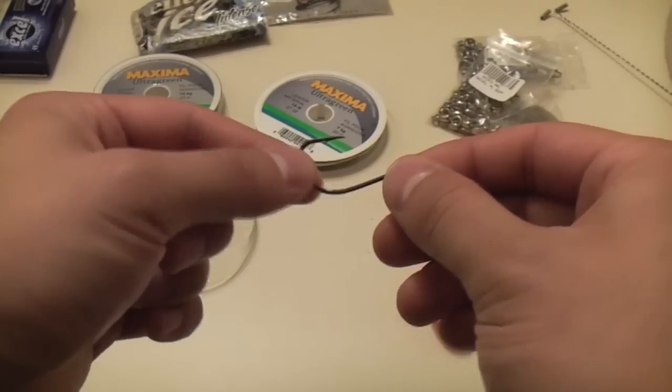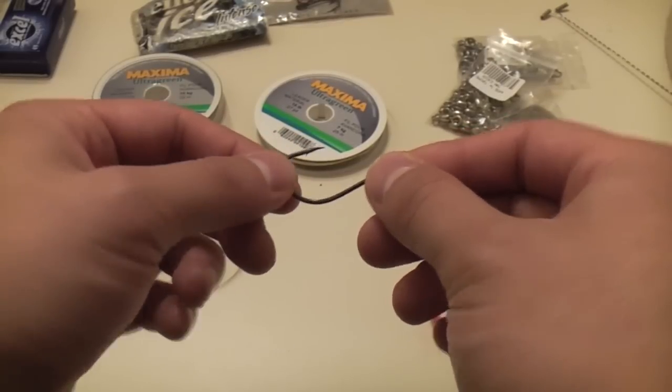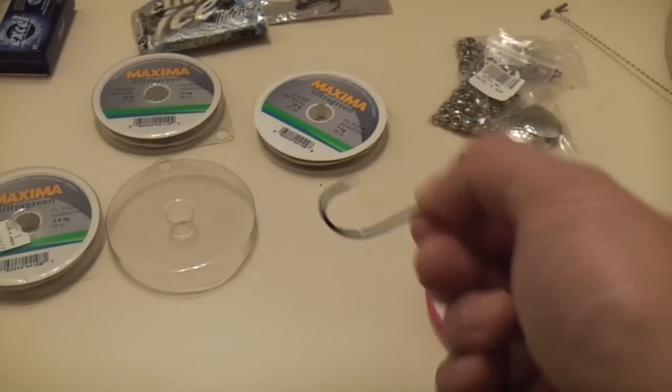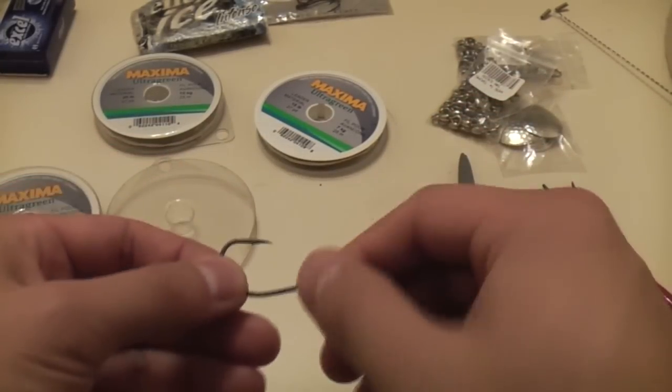Alright, I'm going to show you guys how I tie my double egg loop knot for my hooks. It's going to be the same as a single but just with a very small variation, and I like using it a lot.